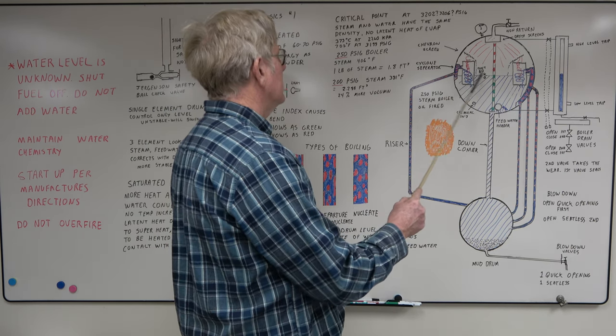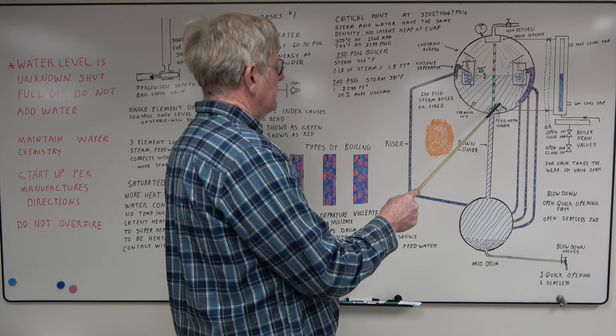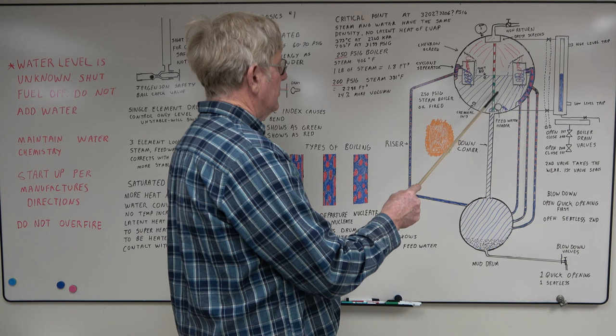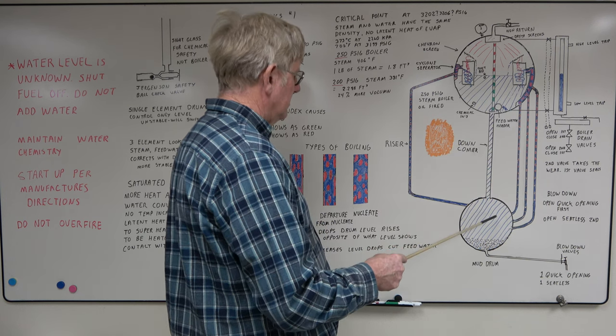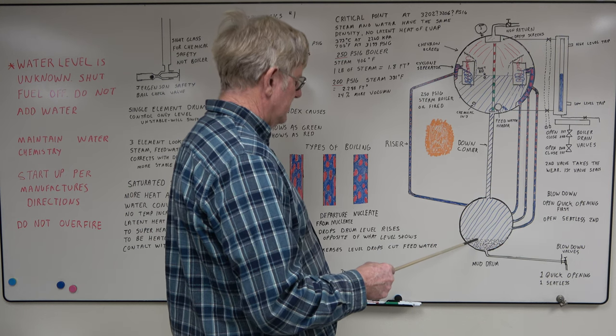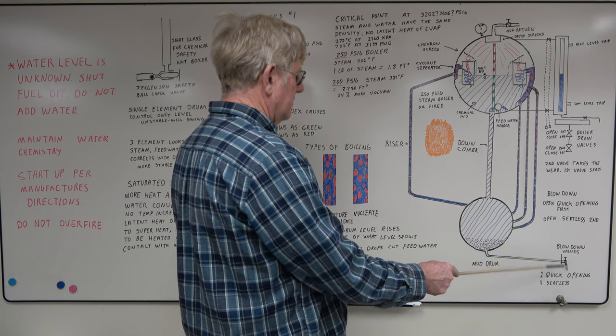Basically, your steam drum contains a supply of water. You add your feed water as it is colder than the water in the drum usually. It'll help increase the density of the water. It drops down the mud drum. It's called the mud drum because in the old days you used to get a lot of particulate sludge built up down here. We have our blow-down valves.